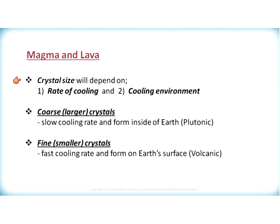When we look at magma and lava crystallizing, the crystal size will depend on two factors: the first is the rate of cooling, and the second is the cooling environment. Coarser, larger crystals represent an environment where slow cooling has occurred, generally forming inside the Earth in a plutonic or intrusive environment. Fine or smaller crystals are generally produced by a fast cooling rate, forming in an environment on or near the Earth's surface, called a volcanic or extrusive environment.